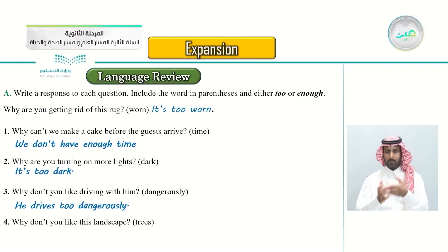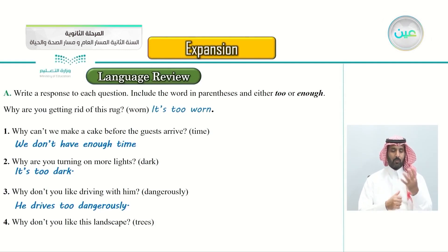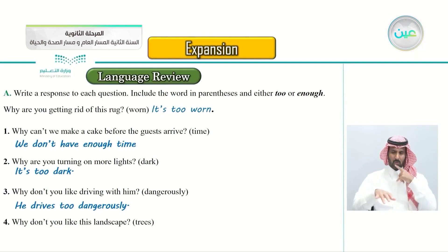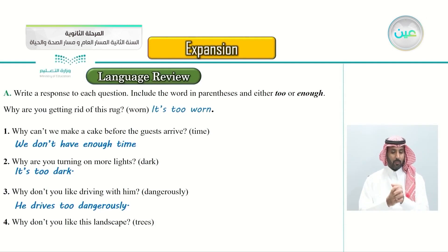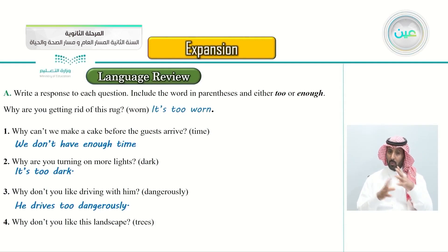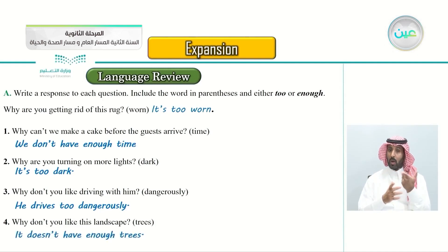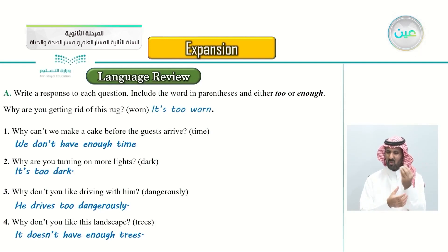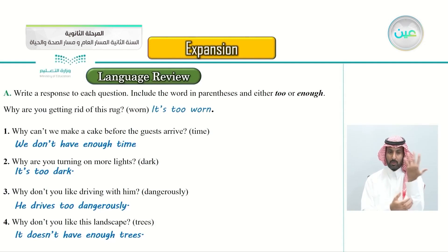Number four: why don't you like this landscape? The word is 'trees'. Which one do we use — 'too' or 'enough'? The answer is: because it doesn't have enough trees. I want more trees, so you say the landscape doesn't have enough trees.